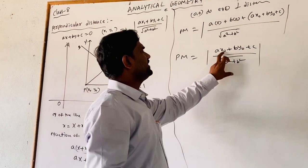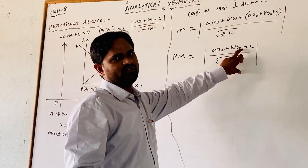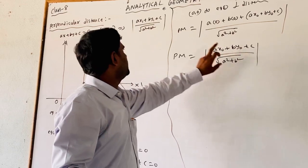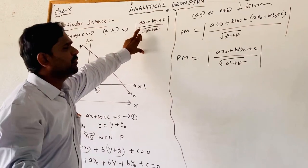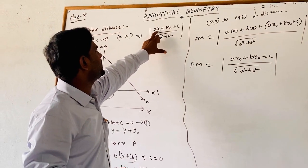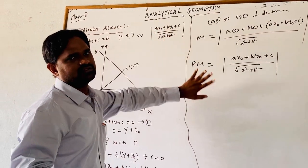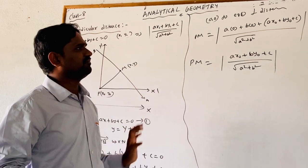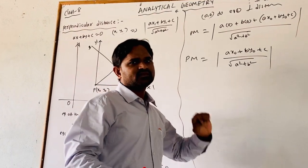This is the equation for the perpendicular distance from a point to the given line. Here, the point is (X naught, Y naught); in the previous class, we referred to it as (X1, Y1) — both are the same.